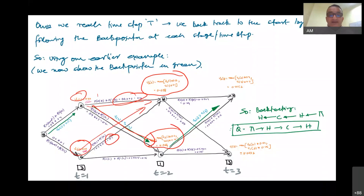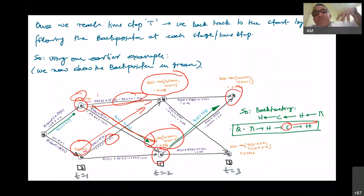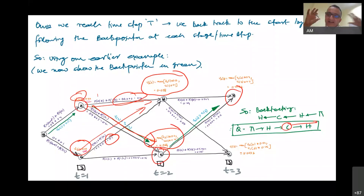Following the back pointers gives you the green path through the trellis: starting with a hot day, transitioning to a cold day, and ending with a hot day. That is the most likely weather sequence that led to 3, 1, 3 ice creams being consumed over those three consecutive days.